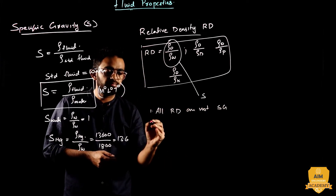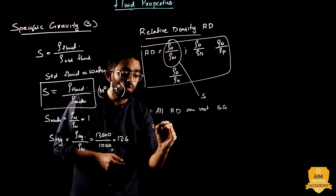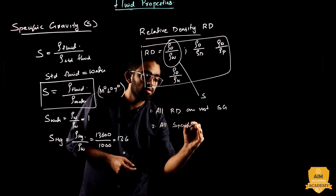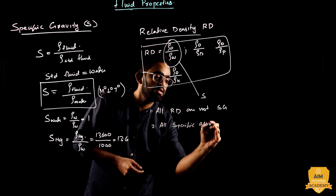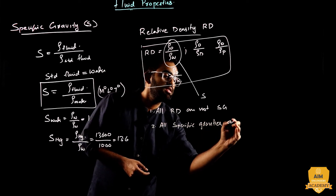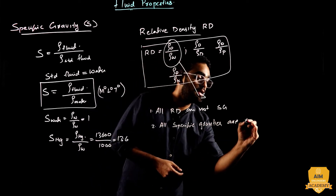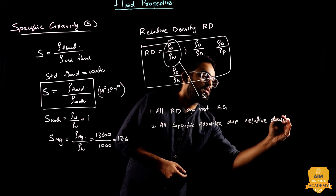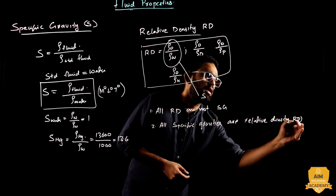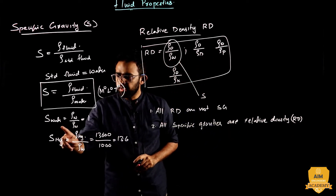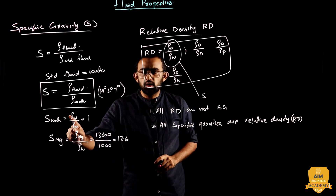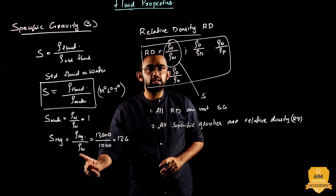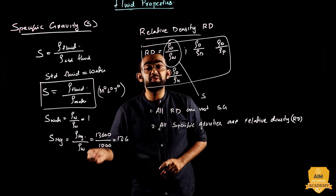Second point: all specific gravities are relative density. For example, the density of mercury with respect to the density of water — this is relative density, and this is also specific gravity.